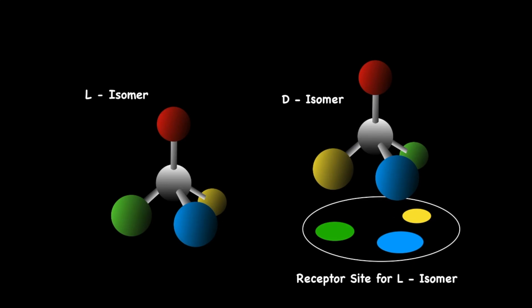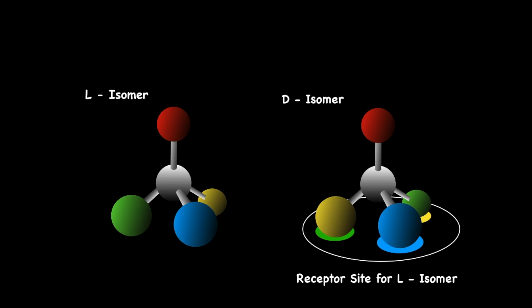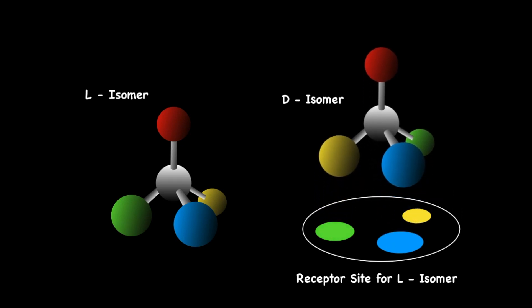Now, let's take the same receptor and attempt the same scenario with the D-isomer. You will quickly see that the geometrical orientation of the D-isomer does not match the geometrical orientation of the receptor binding site. While the blue region of the molecule is in perfect alignment with the blue binding site, the yellow and green regions are misaligned. This prevents the molecule from binding to the receptor binding site and it's subsequently rejected.